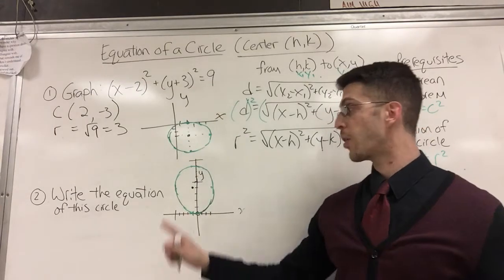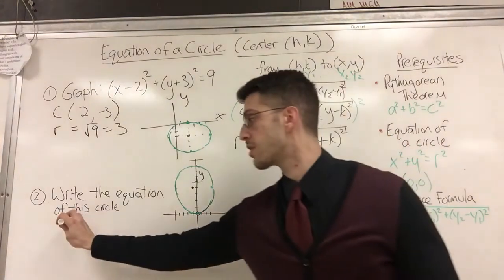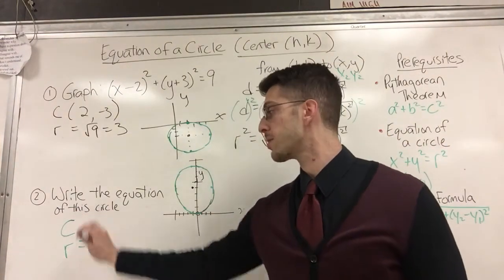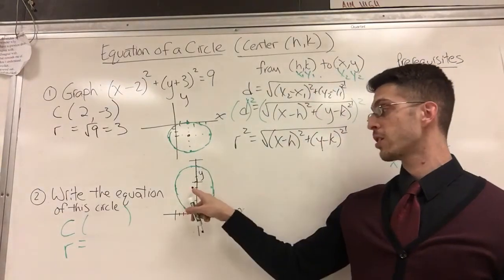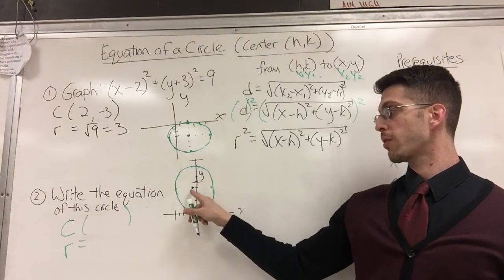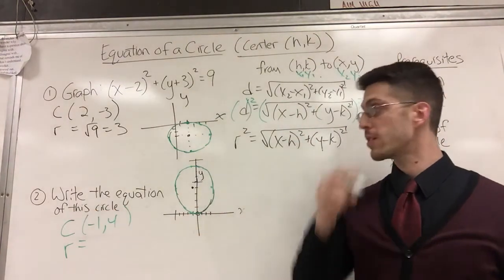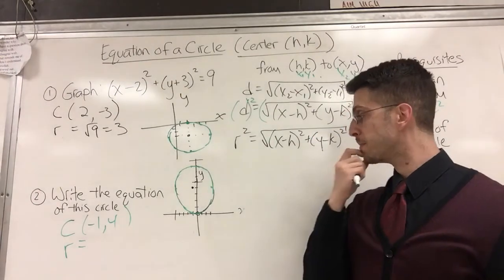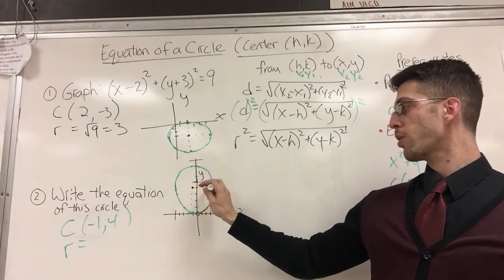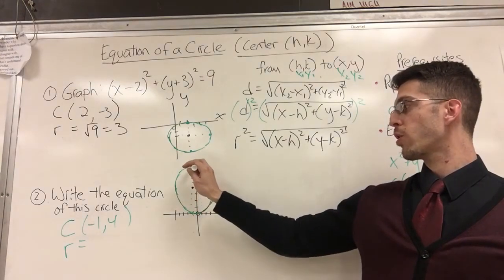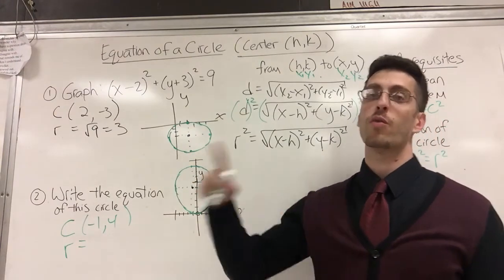Let's think backwards now. Here's the circle — give me the equation. What do you need? Two things: the center and the radius. Looking at this, the center should be very clear — it's right there. That's negative one comma four. What's the radius? Just count: four down, four right, four up, four left. You're safe to assume the radius is four.